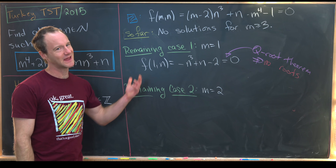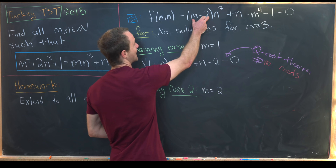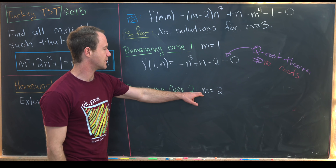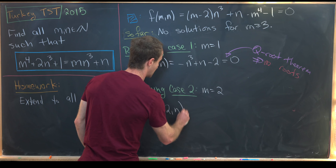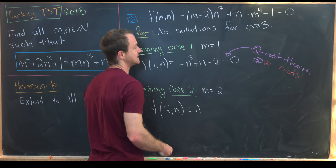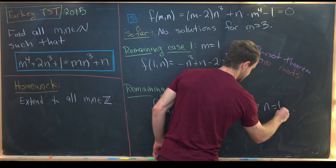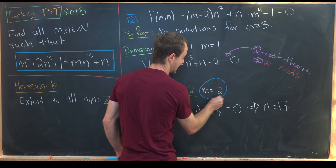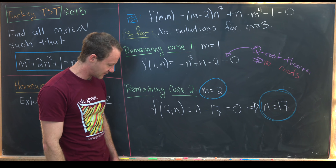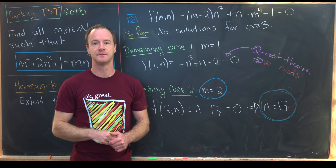For m = 2, there's a big hint built in: m = 2 cancels out the cubic term entirely, leaving something simple. Plugging in: f(2, n) = 0·n³ + n − 2⁴ − 1 = n − 17 = 0, so n = 17. After all that work, we've found our only solution over natural numbers: (m, n) = (2, 17). As mentioned at the start, a nice extension is to solve over the integers — try that on your own.